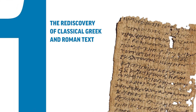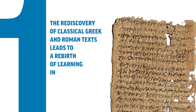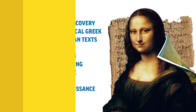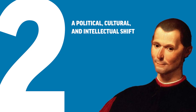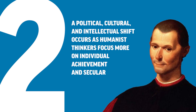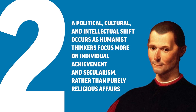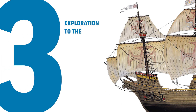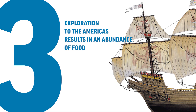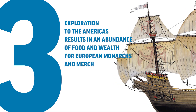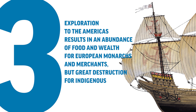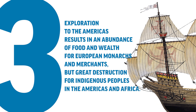I'm going to start off by just telling you Unit 1 in five sentences. Number one, the rediscovery of classical Greek and Roman texts leads to a rebirth of learning in Europe called the Renaissance. Number two, a political, cultural, and intellectual shift occurs as humanist thinkers focus more on individual achievement and secularism rather than purely religious affairs. Number three, exploration to the Americas results in an abundance of food and wealth for European monarchs and merchants, but great destruction for indigenous peoples in the Americas and Africa.